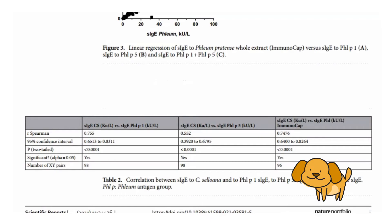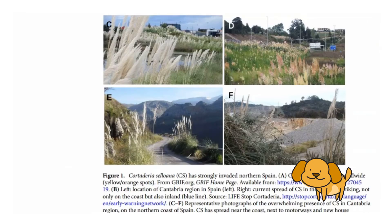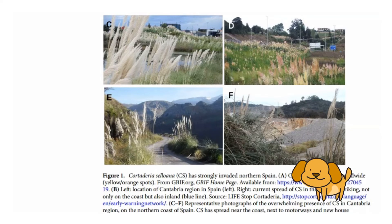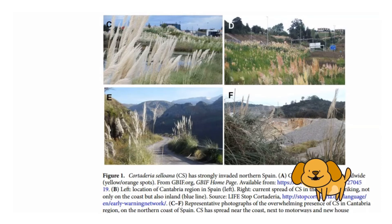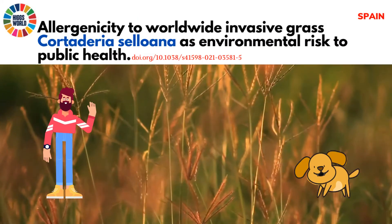What is interesting is this: given that Cortaderia selloana pollenizes later than the local grasses, this would extend the period of grass allergies in the region for about 3 months. It is safe to say that Cortaderia selloana is a serious environmental health issue in the region.